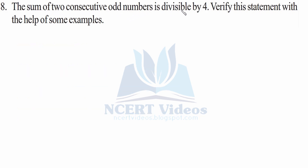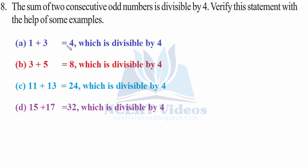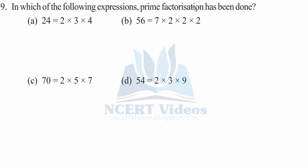Question 8: The sum of two consecutive odd numbers is divisible by 4 — verify with examples. First: 1 + 3 = 4, divisible by 4. Second: 3 + 5 = 8, divisible by 4. Third: 11 + 13 = 24, divisible by 4. Fourth: 15 + 17 = 32, divisible by 4. All these examples verify the statement. That was question 8.